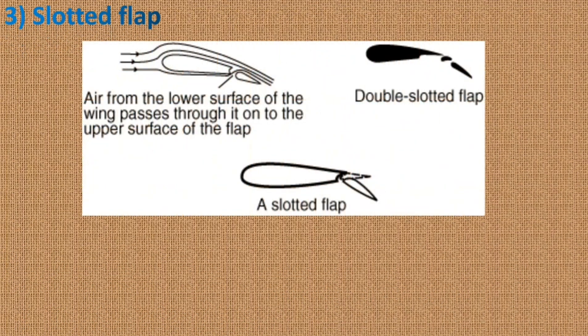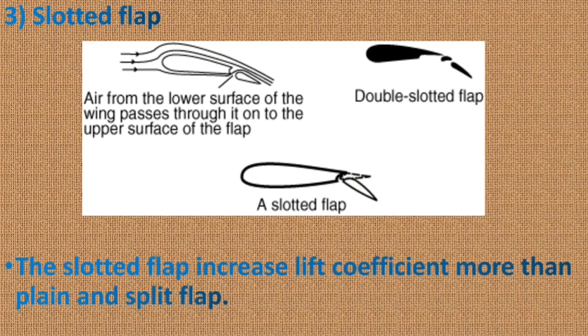Slotted flap. It is similar to the plain flap but incorporates a gap between the flap and the wing to force high pressure air from below the wing over the upper surface of the flap. This helps reduce boundary layer separation and allows the airflow over the flap to remain laminar. The slotted flap increases lift coefficient more than plain and split flap. This flap design is mainly used on modern aircraft.